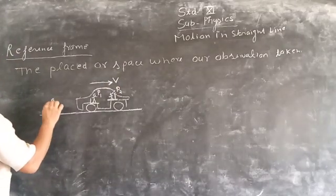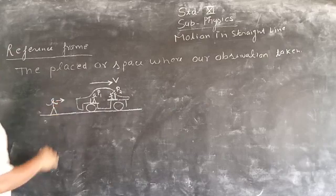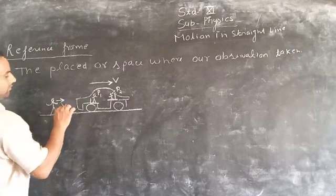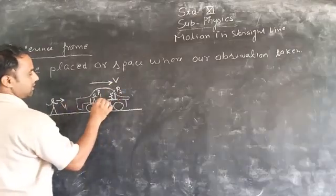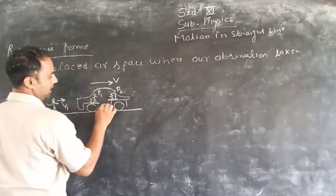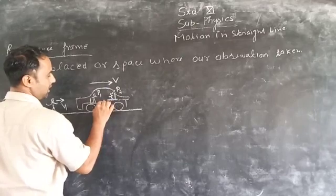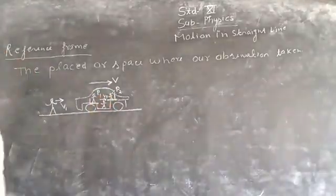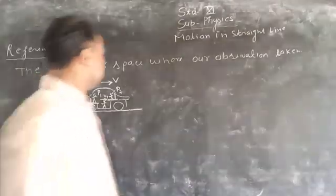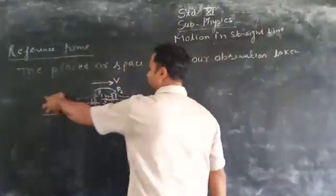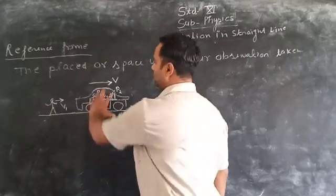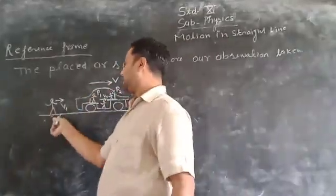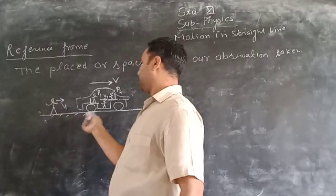That is the simple wire here. C is also running with a speed. There is also a person on a car that is moving. Here we see that this wire — the observer — is observing this system.